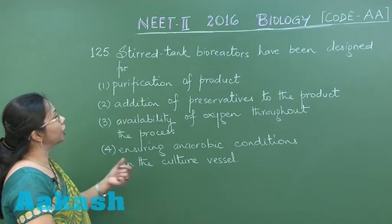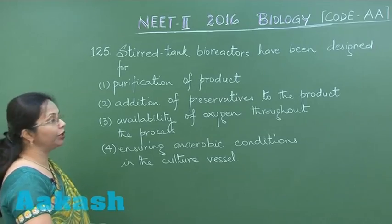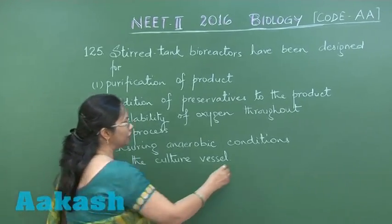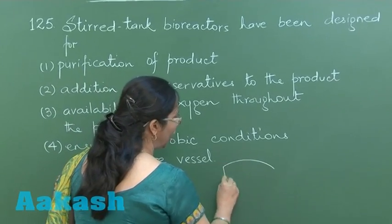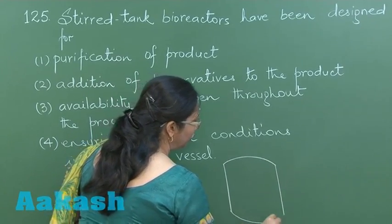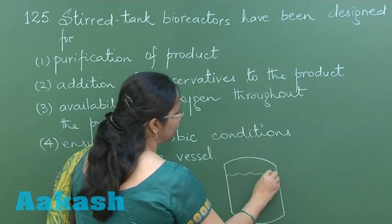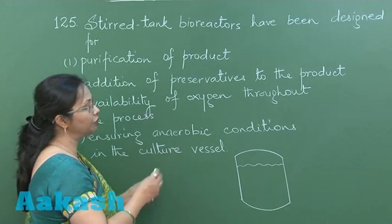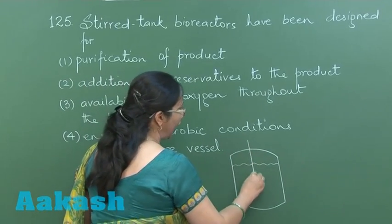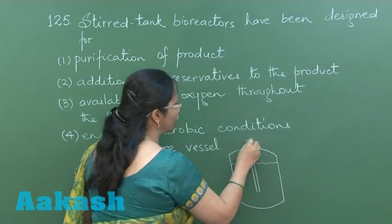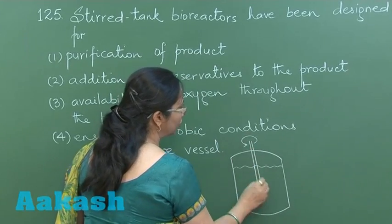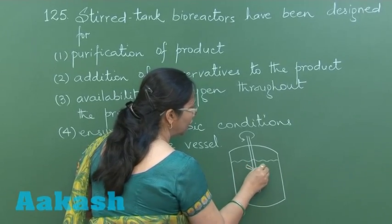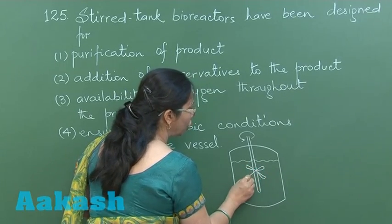Now in this question, stirred tank bioreactors have been designed for. These stirred tank bioreactors have a large sterile vessel in which we take the nutrient medium and inoculate it with the microorganism which has been genetically modified. In this reactor there is a stirrer, and this stirrer has projections called impellers.